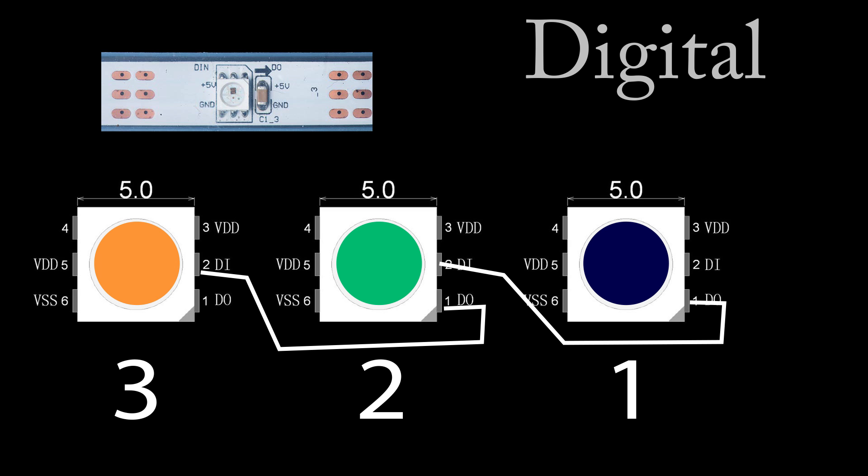There are only three inputs for an addressable LED: the anode, data, and the cathode. Digital, or addressable LED strips present infinitely more color arrangements than analog strips.